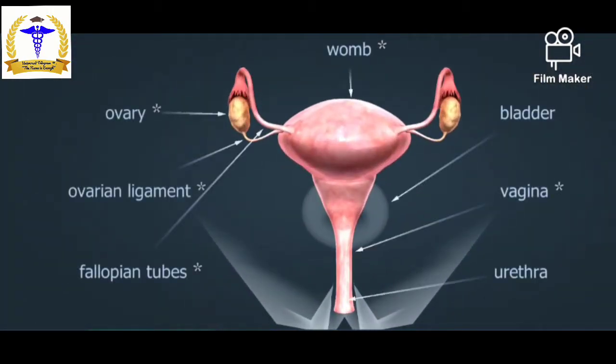First, we will see the internal reproductive organs in the worm view: ovary, ovarian ligament, fallopian tubes, bladder, vagina, and the urethra are the internal reproductive organs.